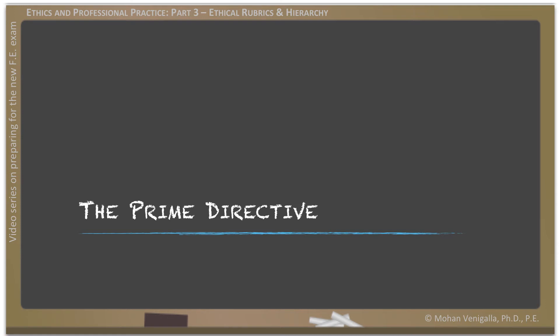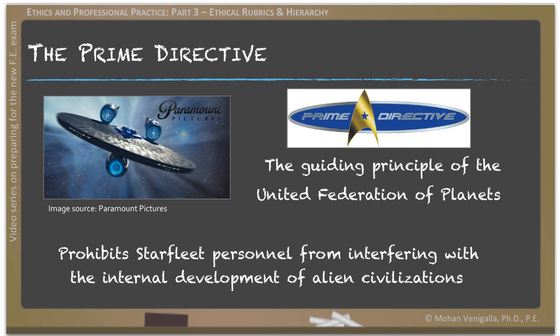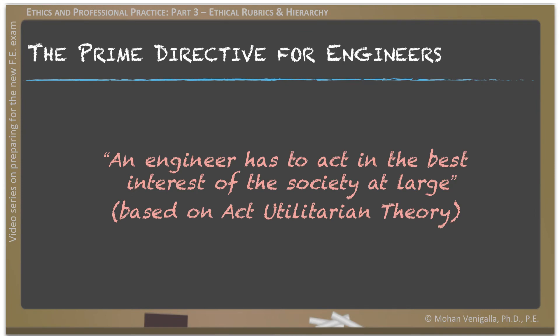You might have noticed that when talking about ethical theories I asked questions and didn't answer most of them — that was intentional, because most ethical dilemmas depend on an individual's moral compass. But there is one prime directive — and I'm a big Star Trek fan. The prime directive for engineers is that an engineer has to act in the best interest of society at large, which is an ethical basis based on act utilitarian theory, and which forms the basis for engineering ethics.